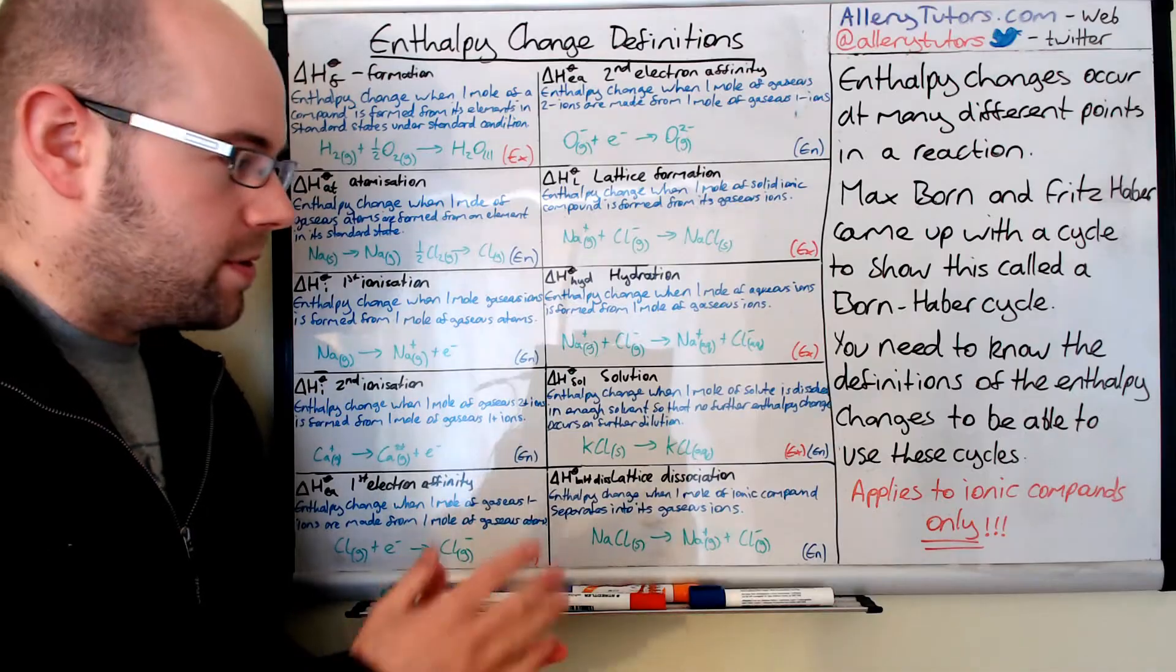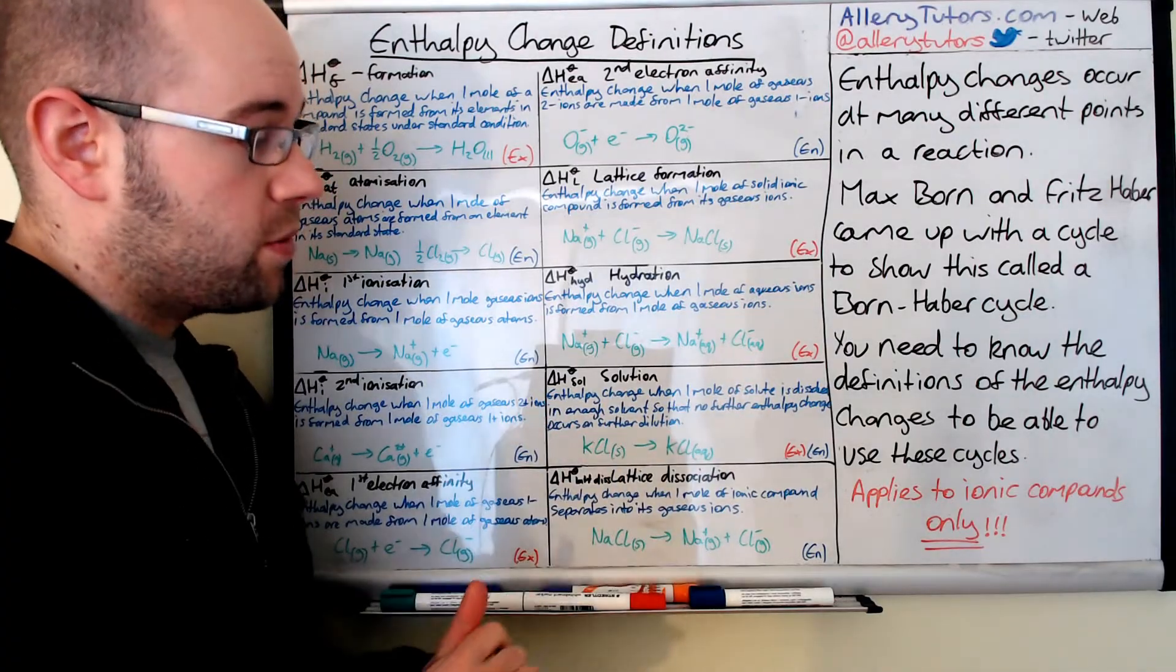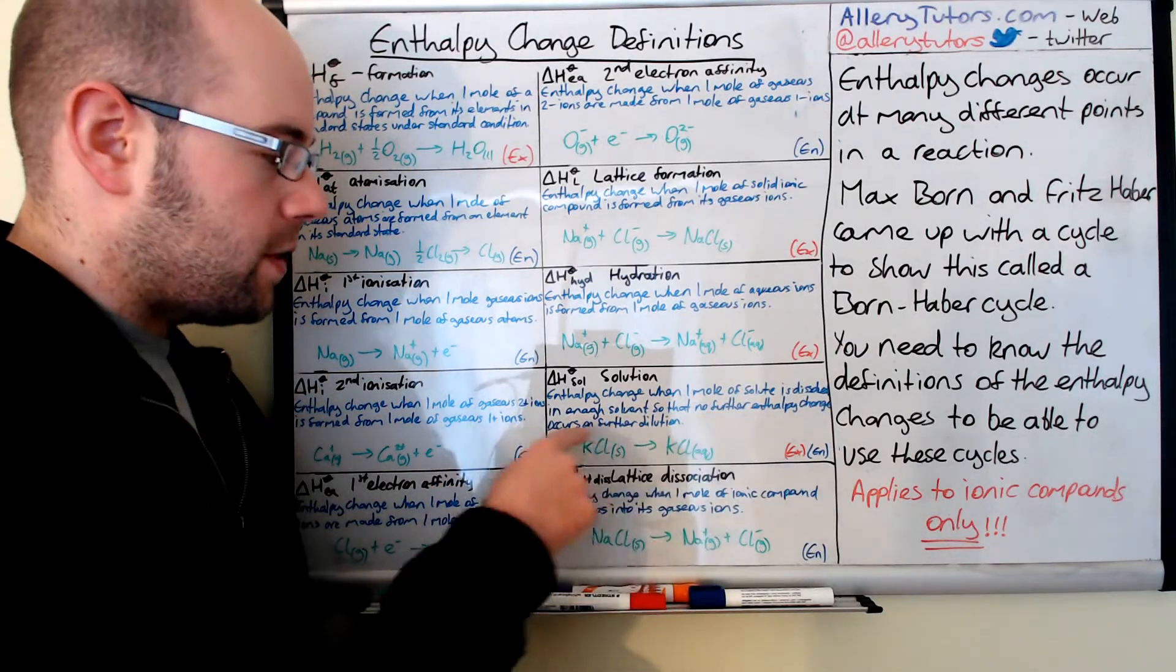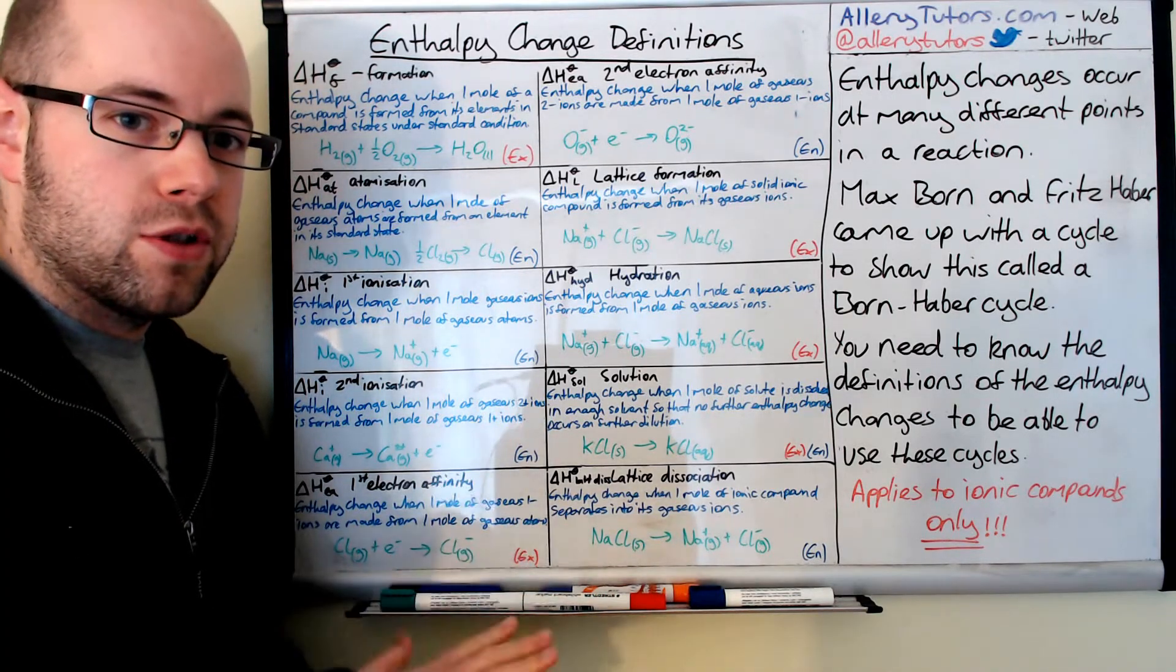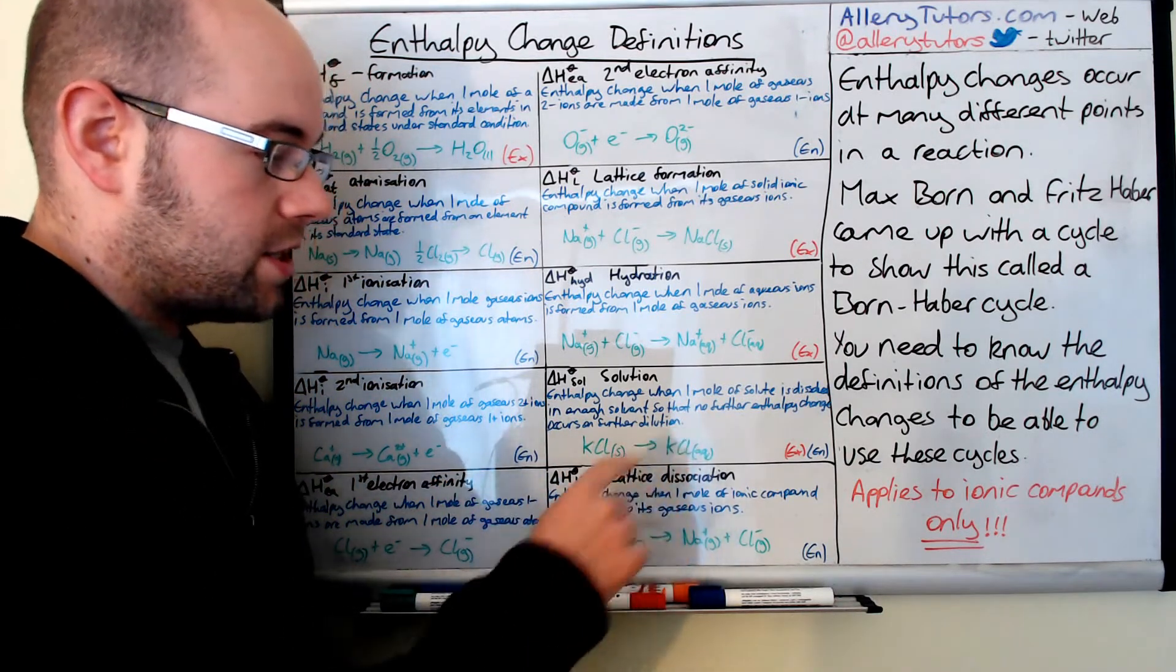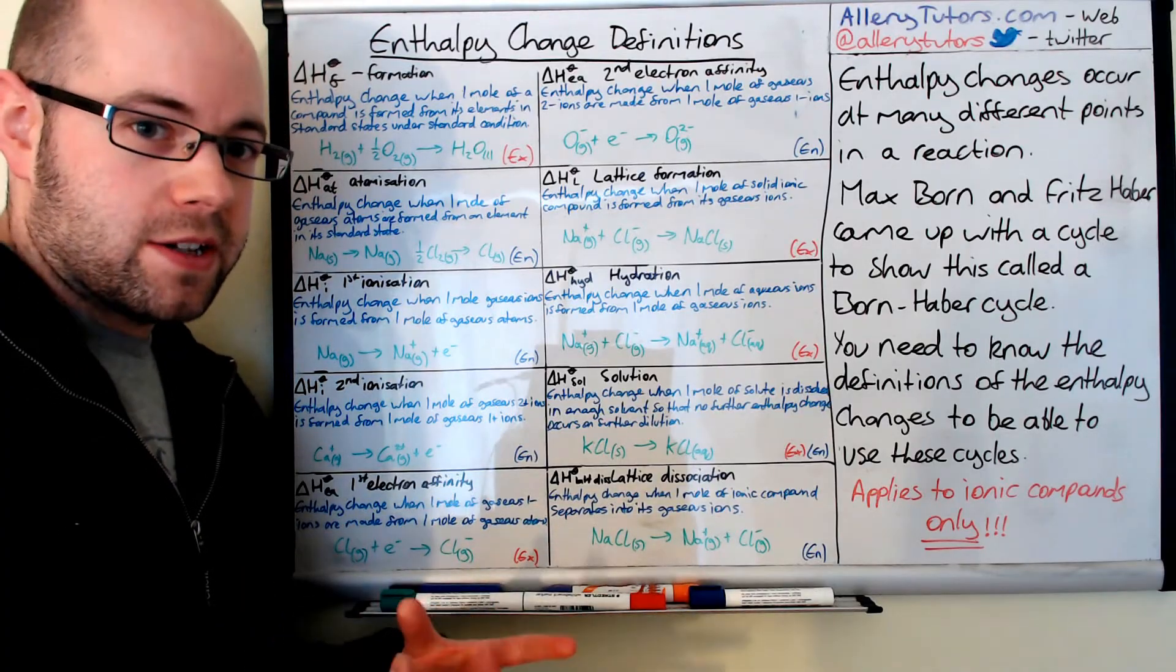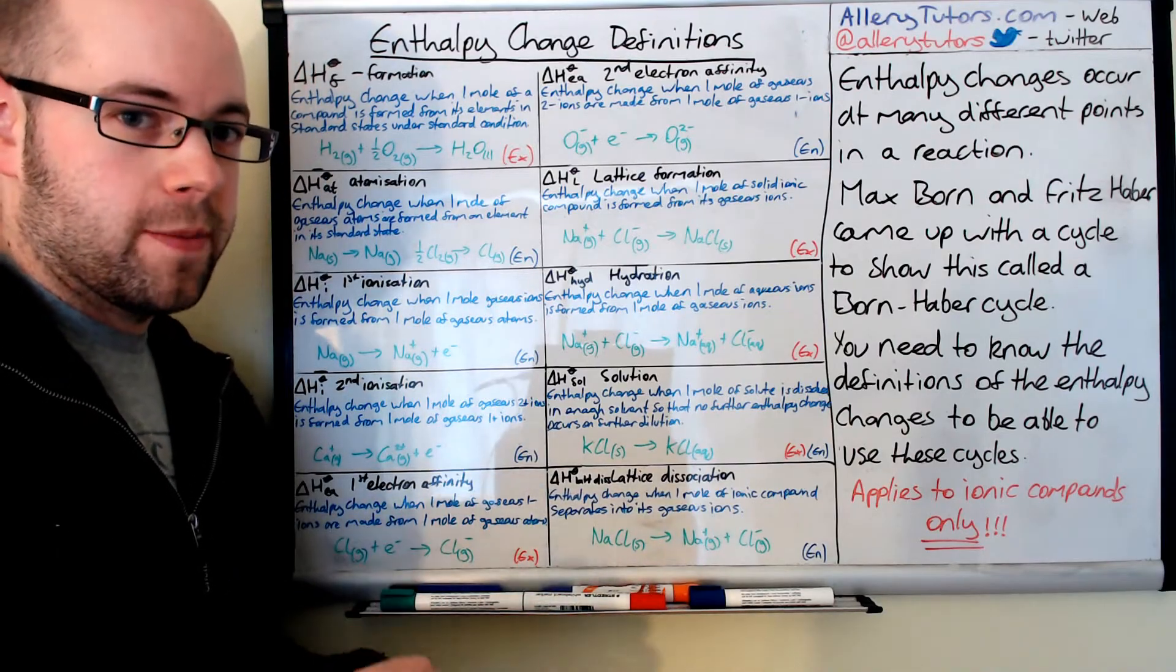Enthalpy of solution. This one depends on the type of compound we're dissolving. This is the enthalpy change when one mole of solute (a solid) is dissolved in enough solvent, which could be water, so that no further enthalpy change occurs on further dilution. Effectively, we're diluting the whole thing until there's no more solute left. This has gone from KCl solid to KCl aqueous. This can be exothermic or endothermic depending on the type of chemical you're using. For example, sodium hydroxide is exothermic when we dissolve it in water, whereas potassium chloride is slightly endothermic.